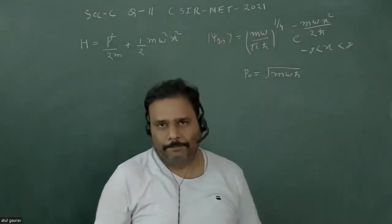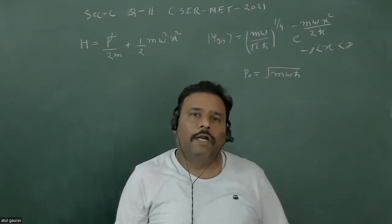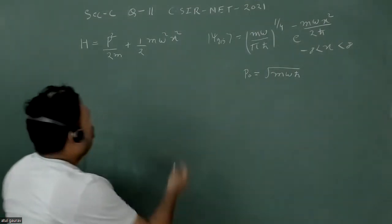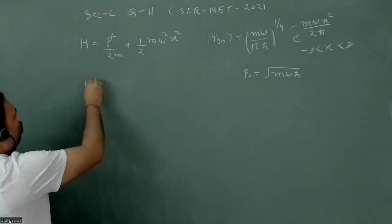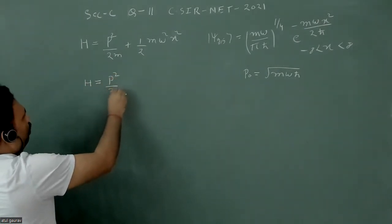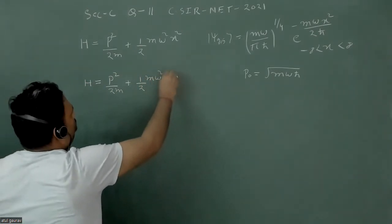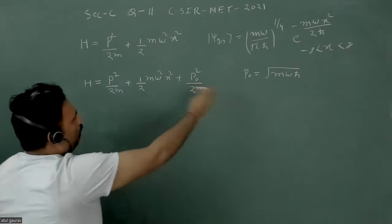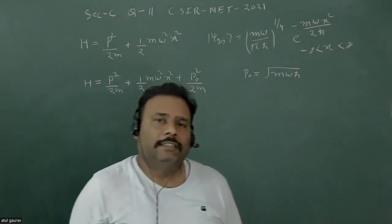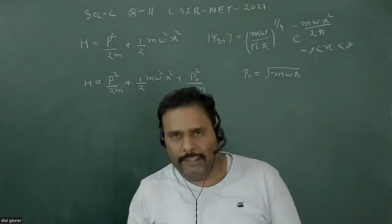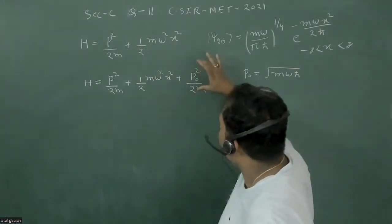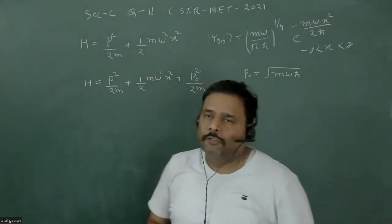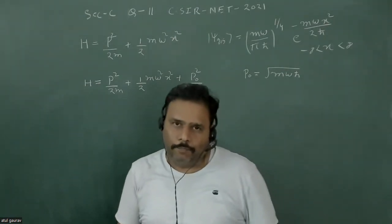We have to calculate the probability that the particle will still be in the ground state after this impulse. When we impart extra momentum, the new Hamiltonian becomes p squared upon 2m plus half m omega squared x squared plus a constant kinetic energy term p-naught squared by 2m. Since p-naught equals root of m omega h-bar, this extra kinetic energy is constant.